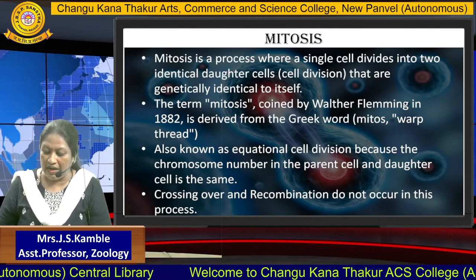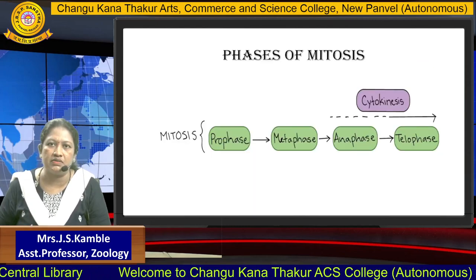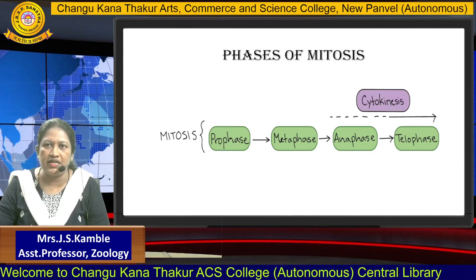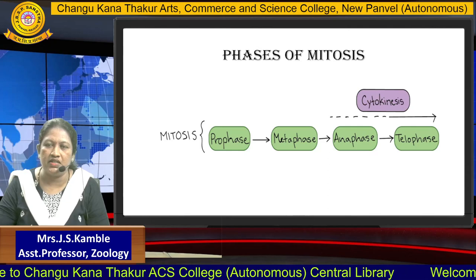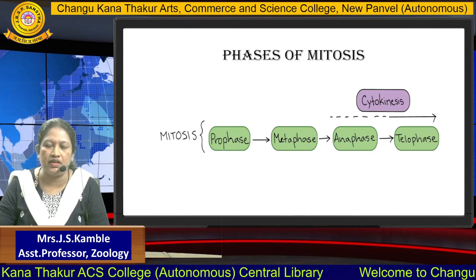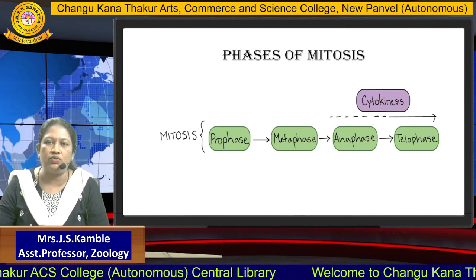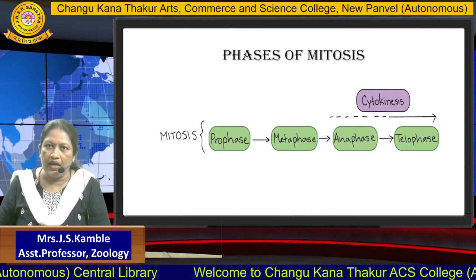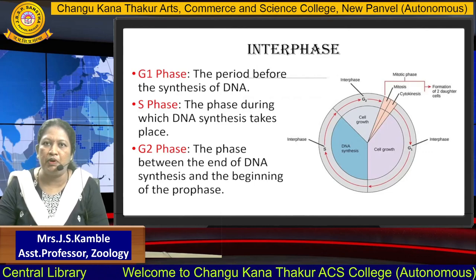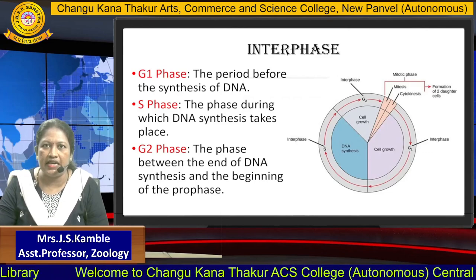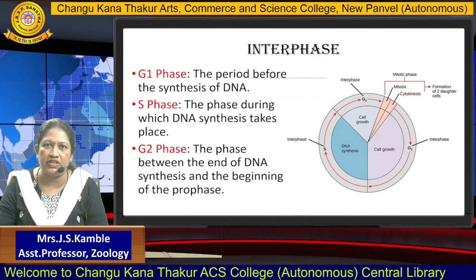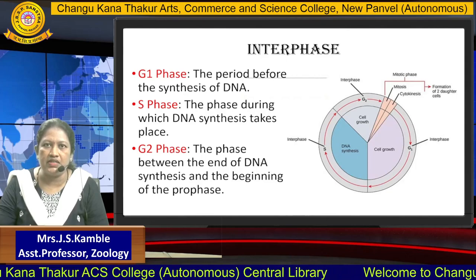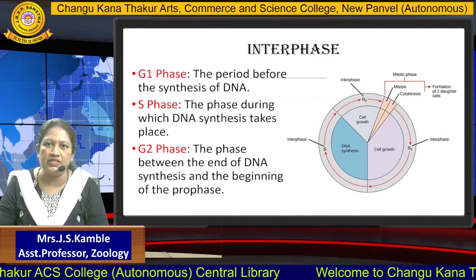Mitosis has four phases: prophase, metaphase, anaphase, and telophase. The last phase we can say is cytokinesis. But before entering into the mitotic phase, the cell has to pass through interphase. Interphase is a preparatory phase where the cell prepares itself for the further mitotic phase. In interphase, there are again three phases: G1 phase, S phase, and G2 phase.